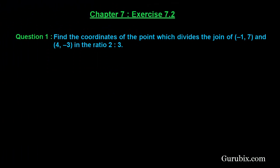Welcome friends. Let us solve question number 1 of exercise 7.2 of chapter 7. The question says: find the coordinates of the point which divides the join of (-1, 7) and (4, -3) in the ratio 2:3. Let us solve it.